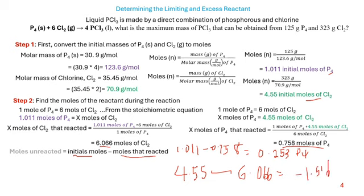Based on these values, we can clearly say that chlorine is the limiting reactant. The negative value indicates that chlorine was totally depleted in the course of the reaction. A value of zero would also indicate a reactant was completely consumed.